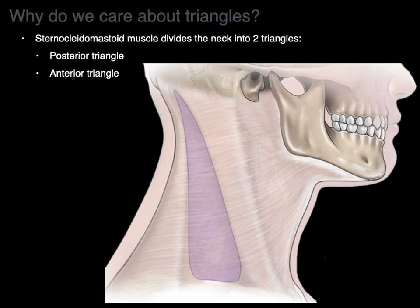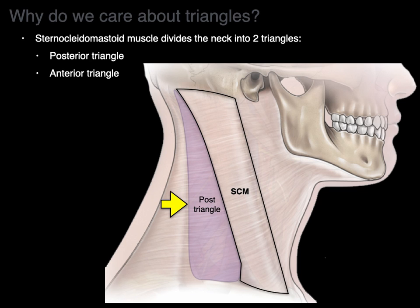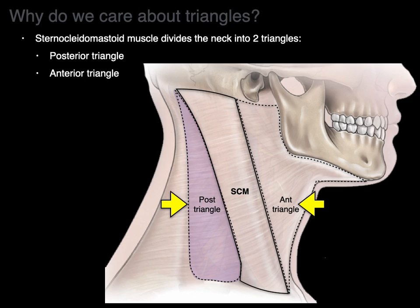Here's a lateral view of the neck — there's the sternocleidomastoid. Behind it is the posterior triangle, and in front of it is the anterior triangle. Ta-da! That becomes one of our big mountain ranges that we recognize: the sternocleidomastoid.